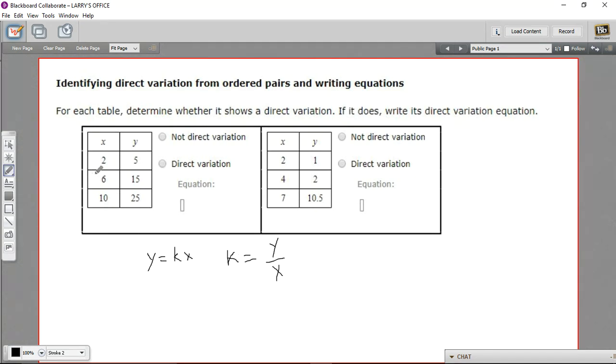In these problems, we're given tables of x and y values, and we're being asked to tell: is this direct variation or not? The way we can tell is to put y over x and see if it comes out to that same constant every time, the same number.